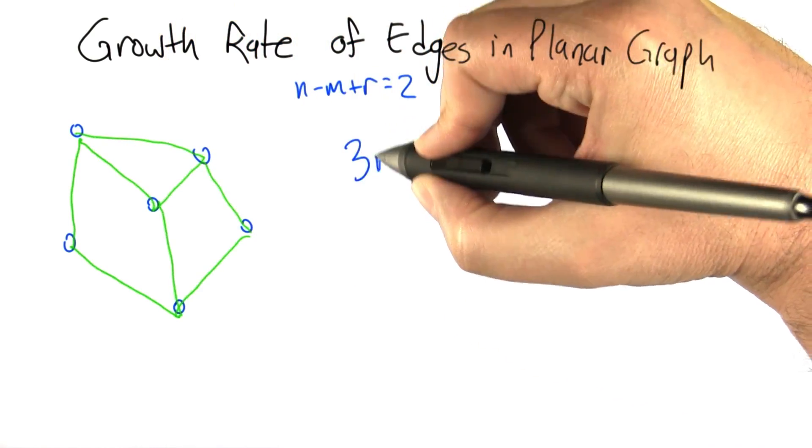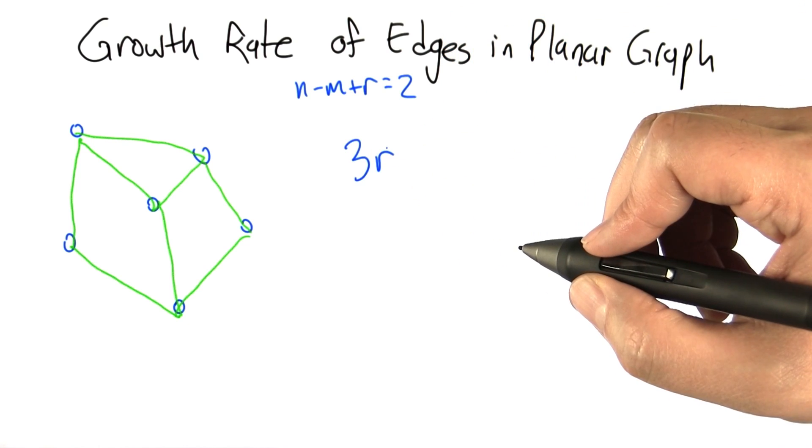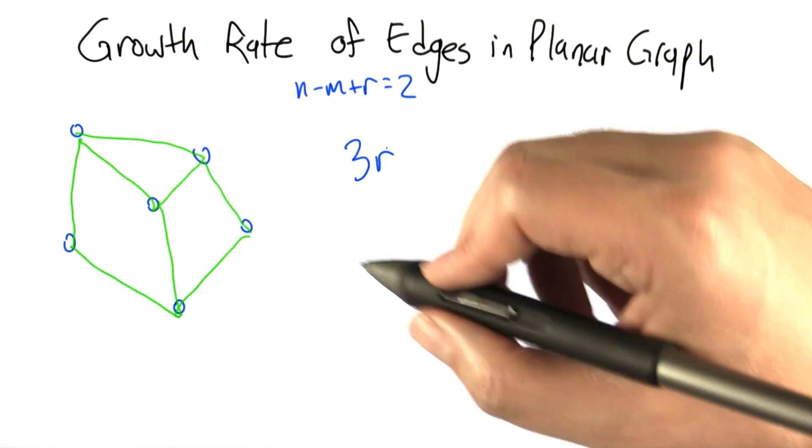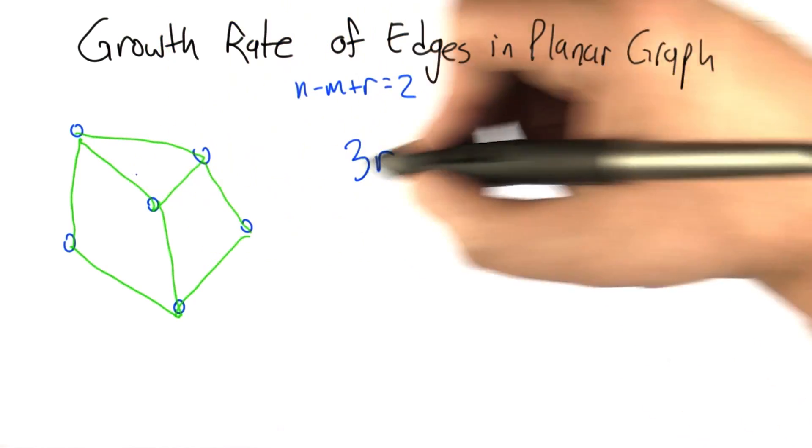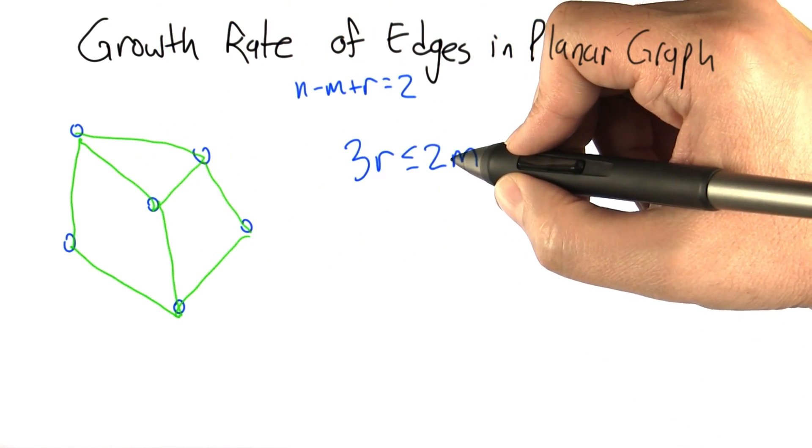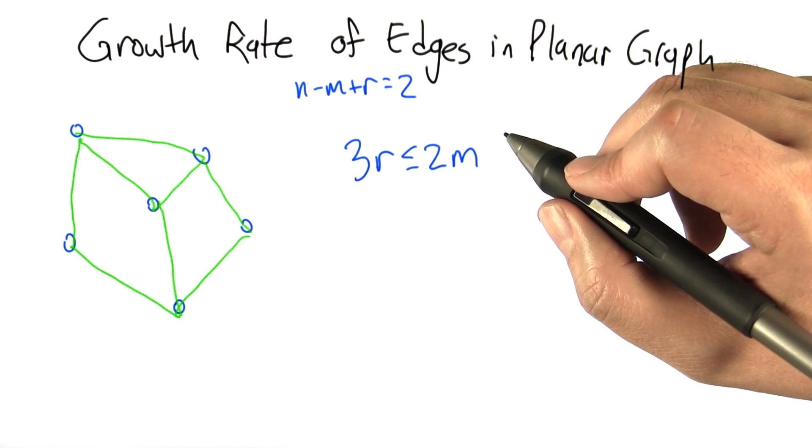So if you think about three times the number of regions, the number of edges has to be at least that big, though we're counting each edge twice because each edge can actually participate in two regions. So twice the number of edges has to be greater than or equal to three times the number of regions.